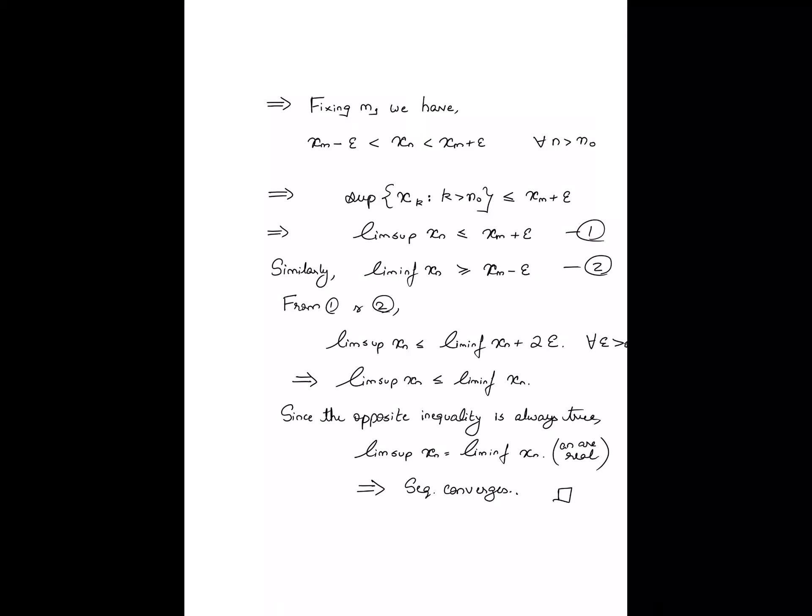Since it is possible to say that the limsup is at most the liminf plus 2 epsilon, where epsilon is arbitrary, that lets you conclude that the limsup must necessarily equal the liminf. That is the crux of this argument.